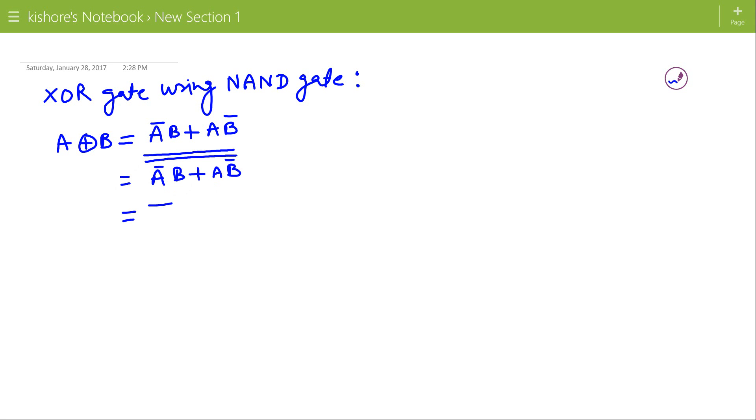Now this can be written by applying De Morgan's theorem for this part. So A bar bar plus B and A bar plus B double bar. So this is A plus B bar NAND A bar plus B.